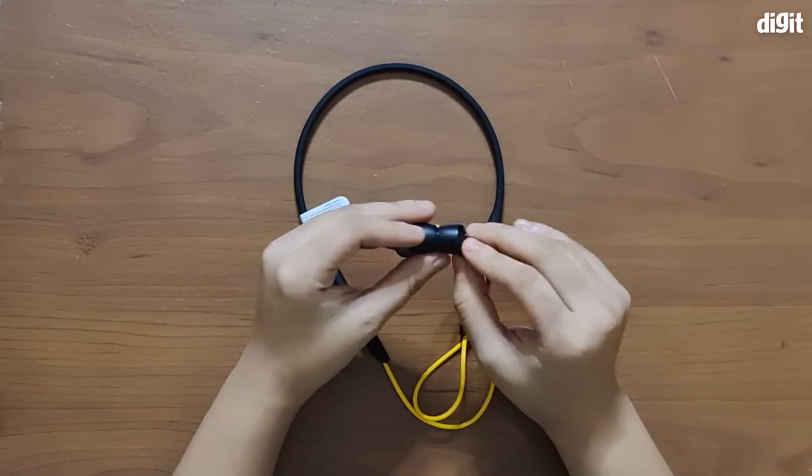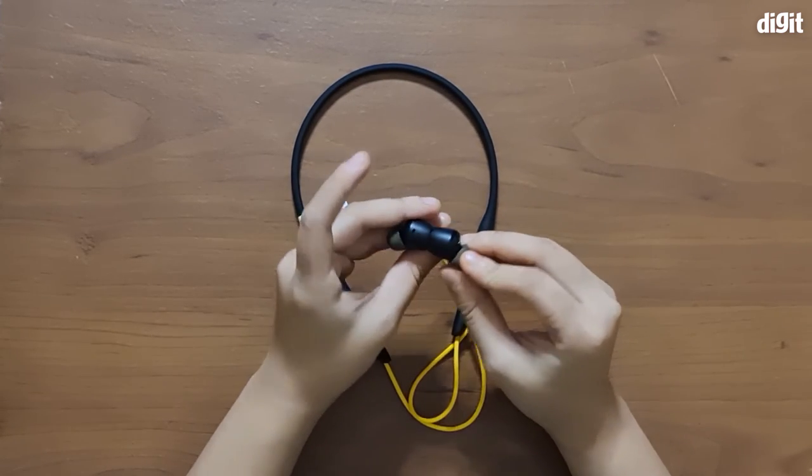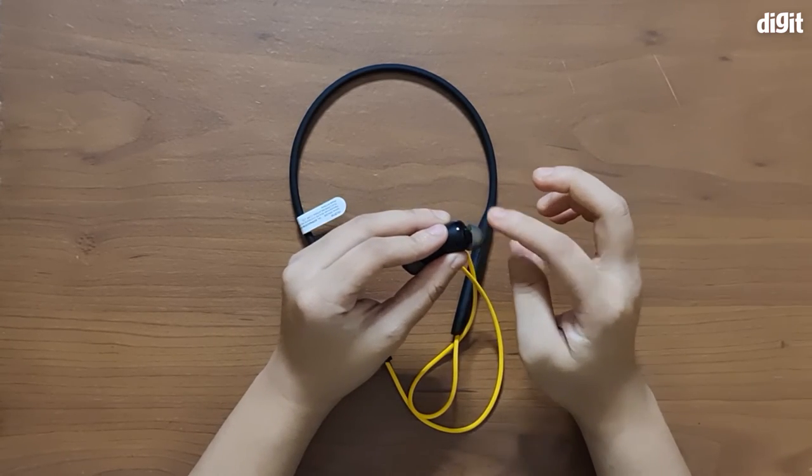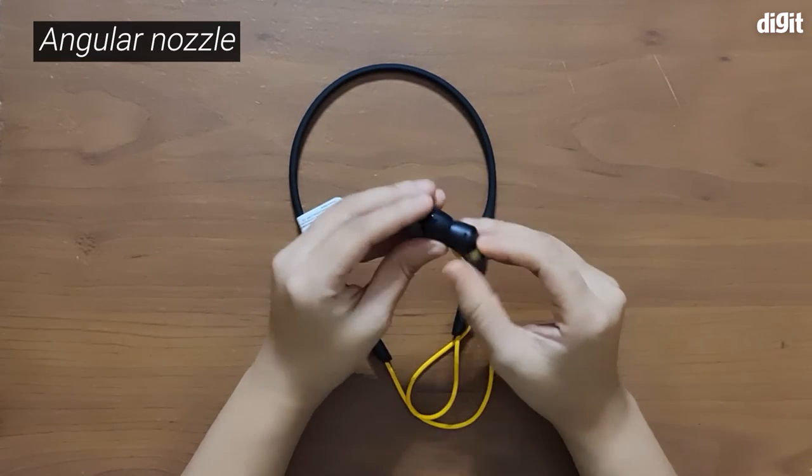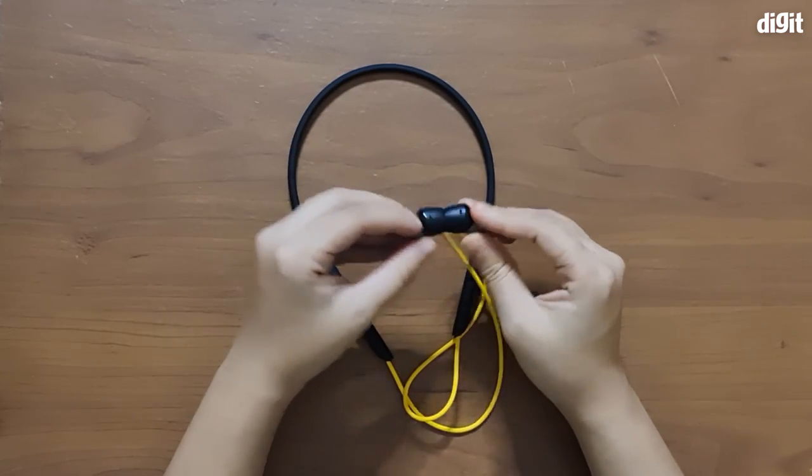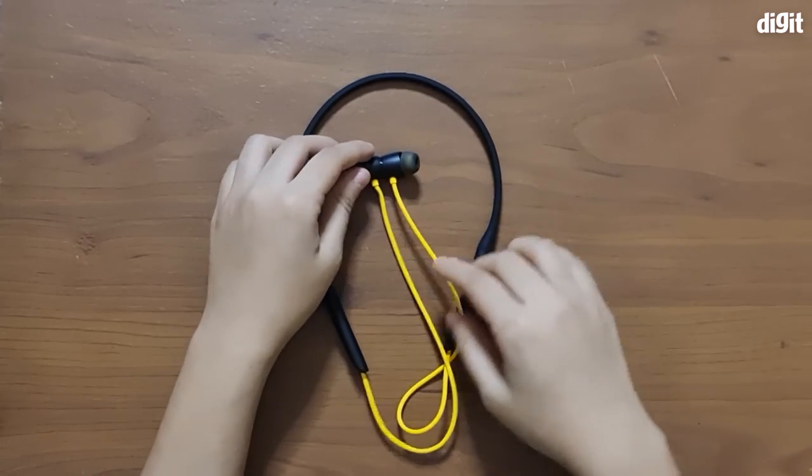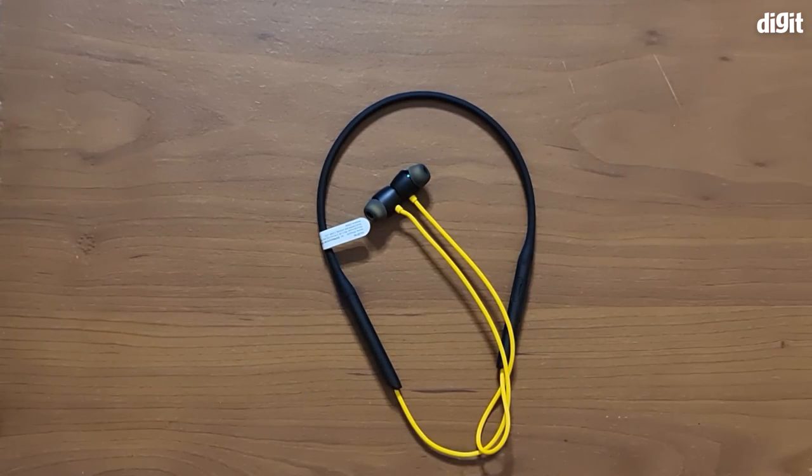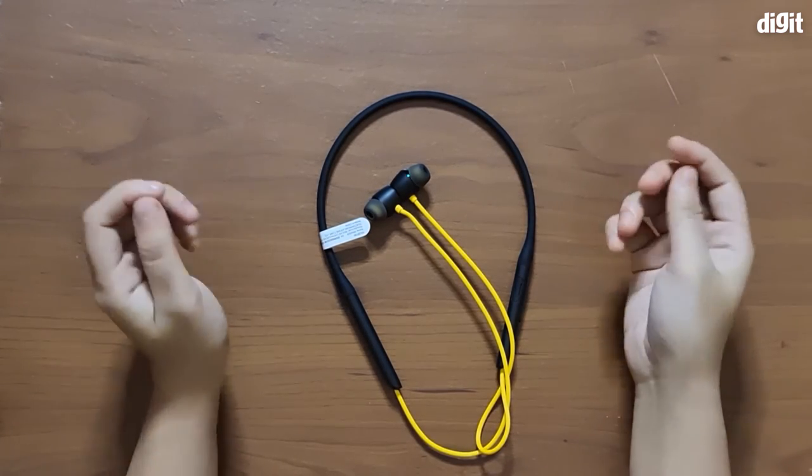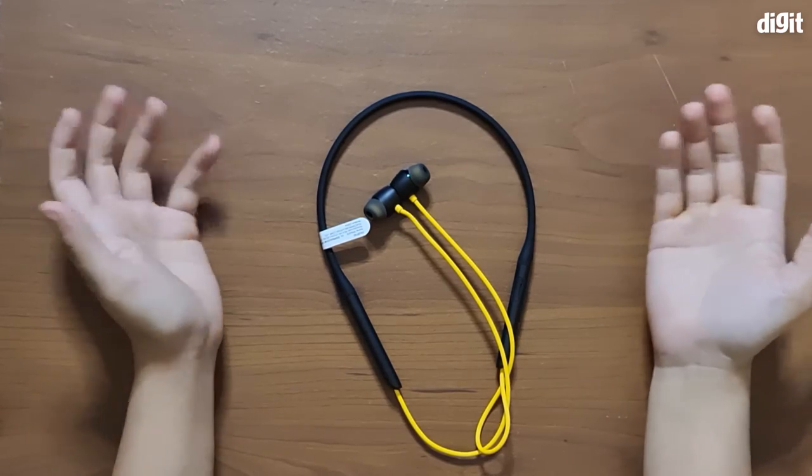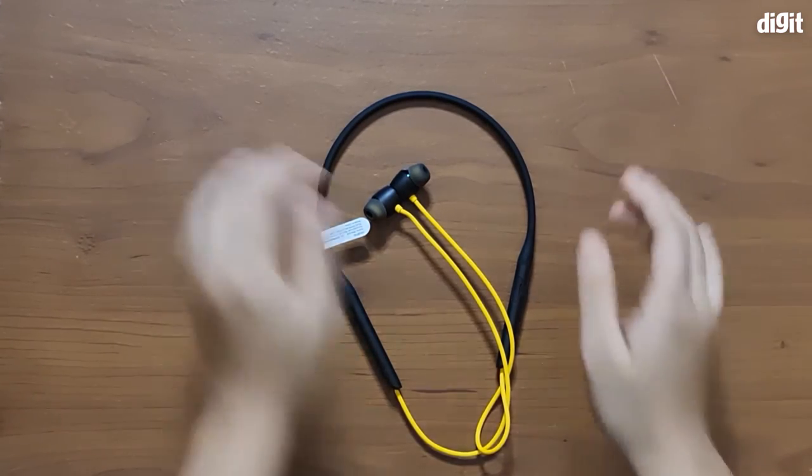You also have a matte black and glossy black dual tone finish happening on the earphones. They're pretty ergonomic earphones. You have the slight angle when it comes to nozzles, which helps in the fit better. Yes, they are looking to be a pretty nice pair of wireless earphones. So that's about it for the unboxing of the Realme Buds Wireless Pro neckband style wireless earphones. Thank you so much for watching this video.